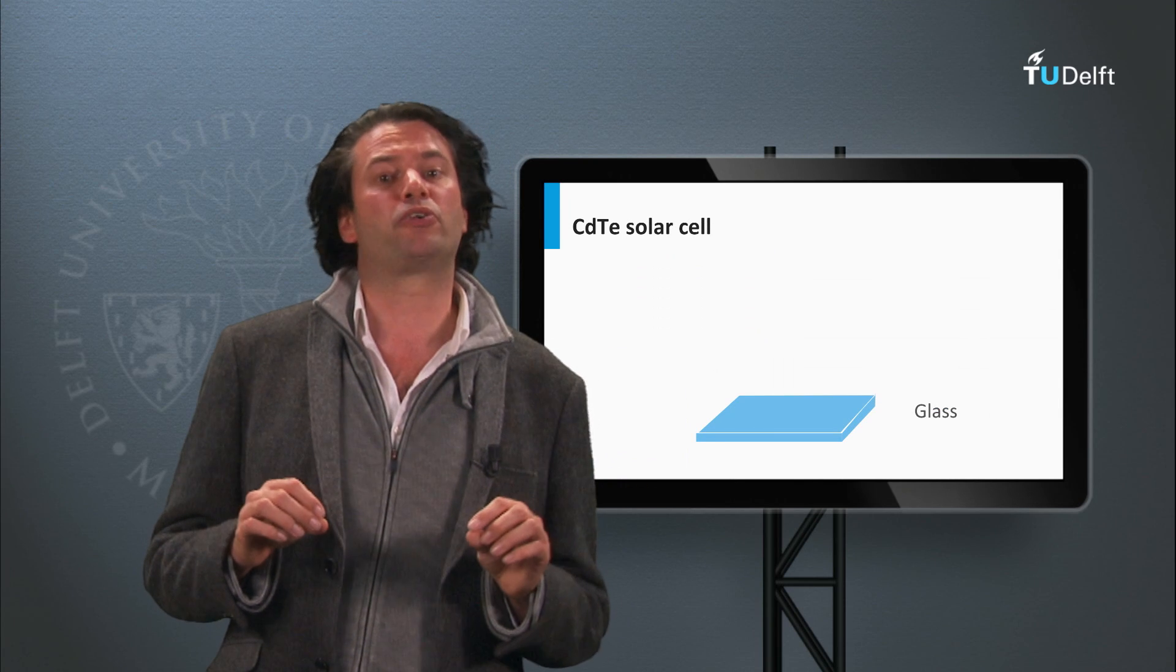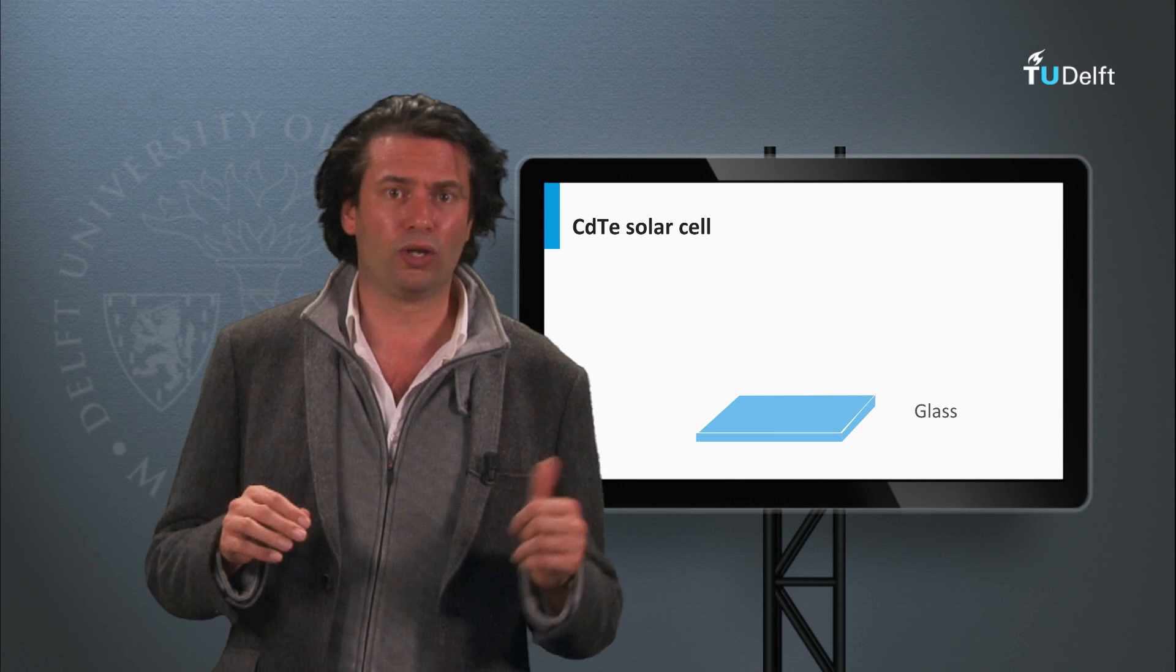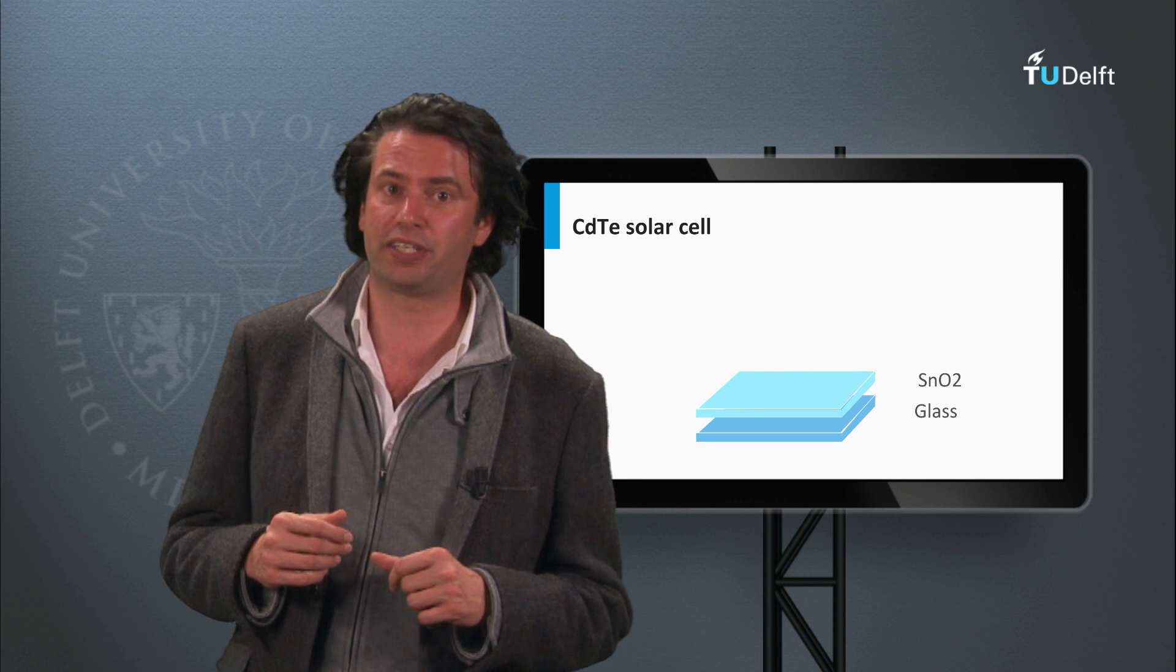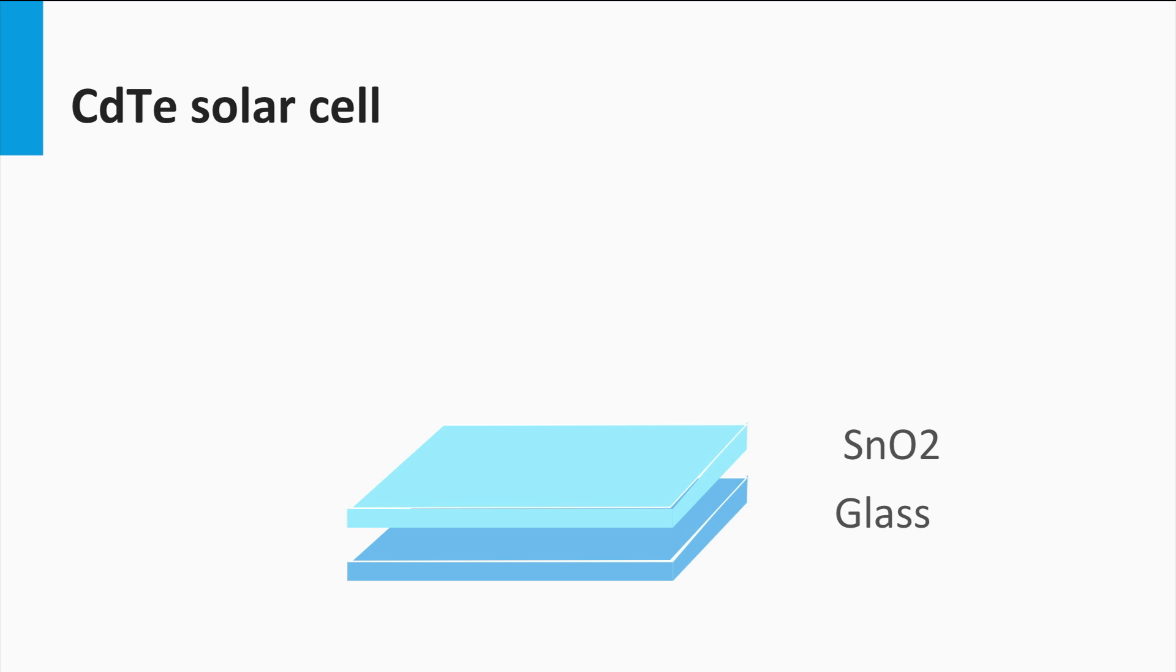The structure of a typical cadmium telluride solar cell looks like this. On a glass the transparent front contact is deposited. This can be tin oxide or cadmium stannate, which is cadmium tin oxide alloys.